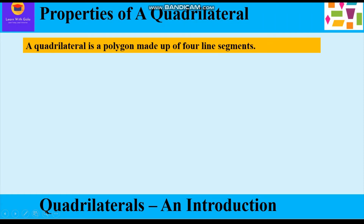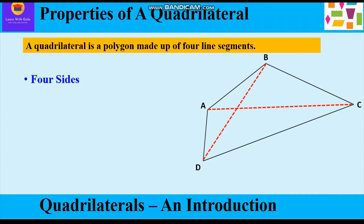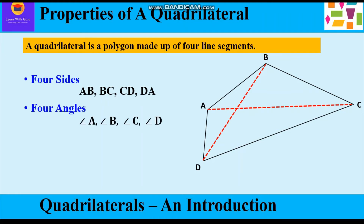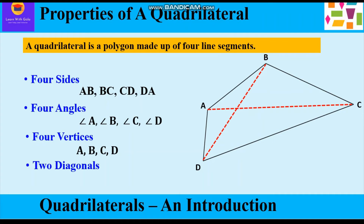A quadrilateral is a polygon made up of four line segments. Let us study the properties of a quadrilateral. It has four sides: AB, BC, CD and DA. It has four angles: angle A, angle B, angle C, and angle D. It has four vertices: A, B, C and D. It has two diagonals: AC and BD.